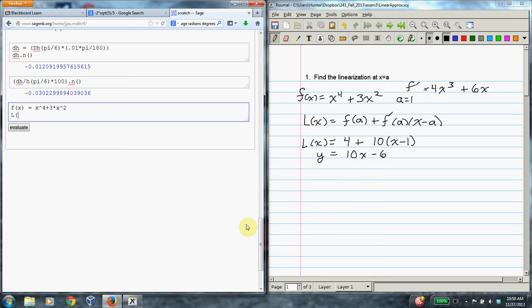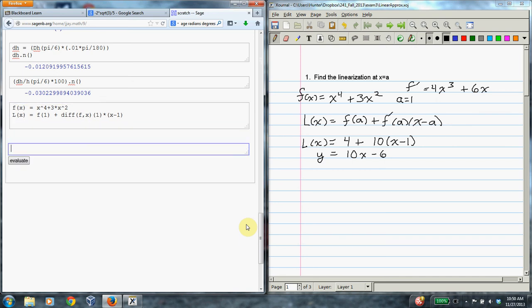I know some people probably get mad when Sage comes up, but let's do it. So f(x) is the function x^4 + 3x^2. And the linear approximation is going to be f(1) plus the derivative of f with respect to x evaluated at 1 times (x - 1). And okay, so there those are.